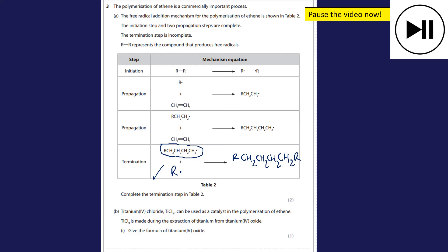Part B, titanium 4 chloride, TiCl4, can be used as a catalyst in the polymerization of ethene. TiCl4 is made during the extraction of titanium from titanium four oxide. Give the formula of titanium four oxide. Well, titanium four means it's four plus, oxide is two minus, so that must mean we need two oxides to one titanium: TiO2.